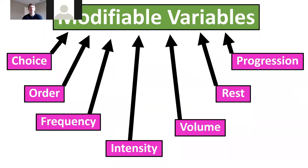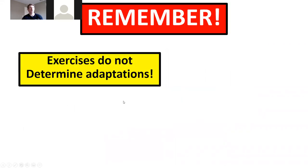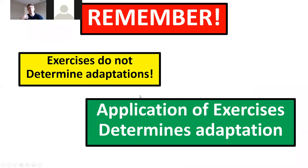The seven modifiable variables — with six primary ones visible in all training plans — drive adaptation. Remember: exercises do not determine adaptations; they determine where and how the adaptation is applied in the body. Exercise choice is based on where you want to create the mechanical adaptation, at what velocity or load, and what balance requirements are needed. Doing a back squat versus a single-leg squat are both squats, but their specific applications produce different adaptations.